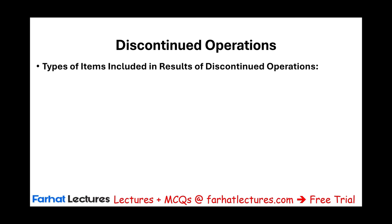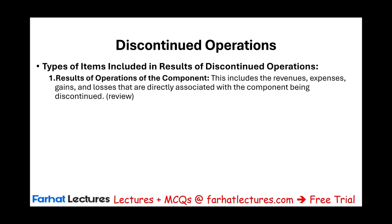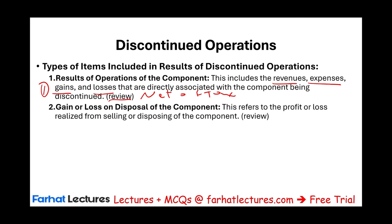Let's review what we typically report under discontinued operations. We report the results of operations of the component. When we discontinue an operation, we include revenues, expenses, gains, and losses that are directly associated with the component being discontinued. We report this net of tax. That's one thing we report — the result of operations — whether we have a gain or a loss for the segment being discontinued and reported separately.